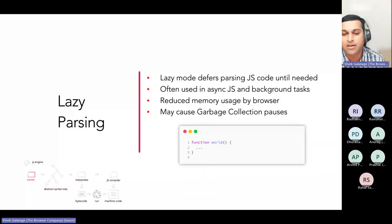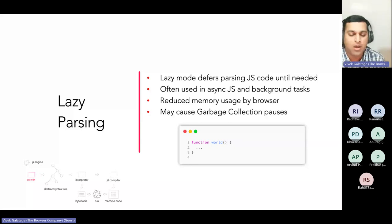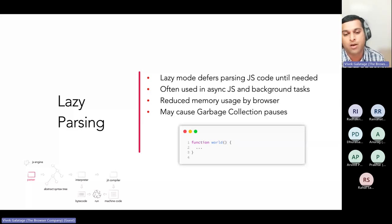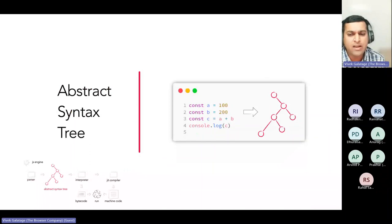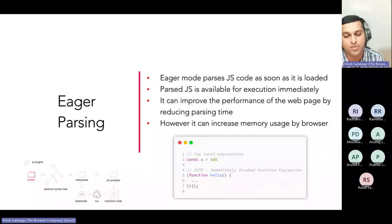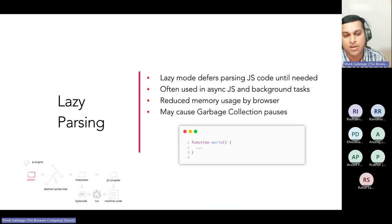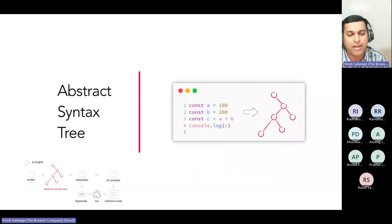Lazy parsing differs the parsing until it is needed. It's often used in asynchronous JavaScript and background tasks. It reduces memory usage by the browser but may cause garbage collection pauses. For example, if you define a function called `helloWorld` but never call it, lazy parsing comes into picture — it will only be parsed once the function call is actually invoked.